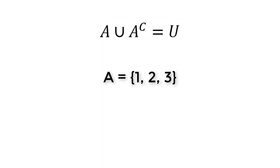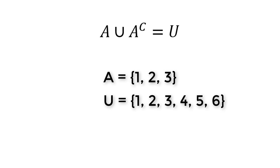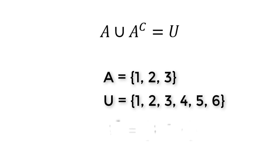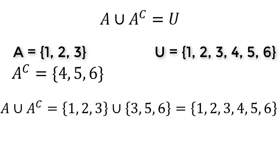Suppose A is a set of {1, 2, 3} and the elements of the universal set are {1, 2, 3, 4, 5, 6}. Then A complement is the set of elements which are not in A. Therefore, A complement is {4, 5, 6}. If we take the union of A and A complement, we get the universal set back.